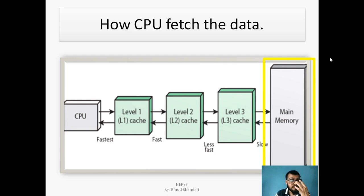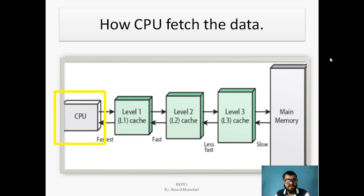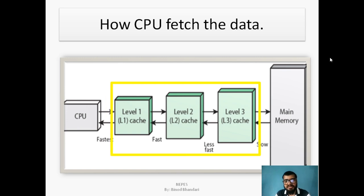This main memory — RAM and ROM — first loads the file from the hard disk (secondary storage) and that file is finally sent to the central processing unit through different levels of cache memory. These cache memories are smaller in size and hold data temporarily. Level 1 cache is smaller than level 2, and level 2 is smaller than level 3, but level 1 is the fastest.